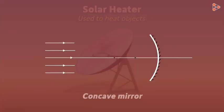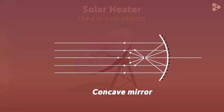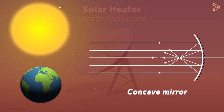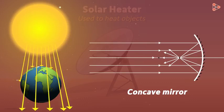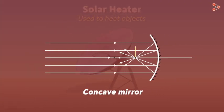We already know that the rays of light coming from an object kept at infinity converge after reflecting from the surface of a concave mirror. The sun is very far away and hence the rays of light coming from it are parallel near the earth's surface. These parallel rays after reflection converge at a point called focus. This focus is a very hot location in space as all the reflected sun rays are concentrated at this point.